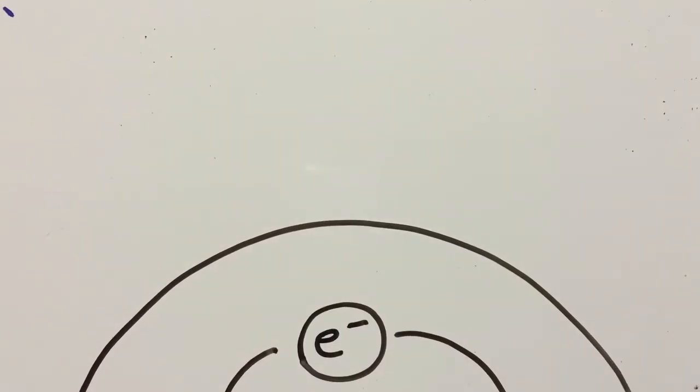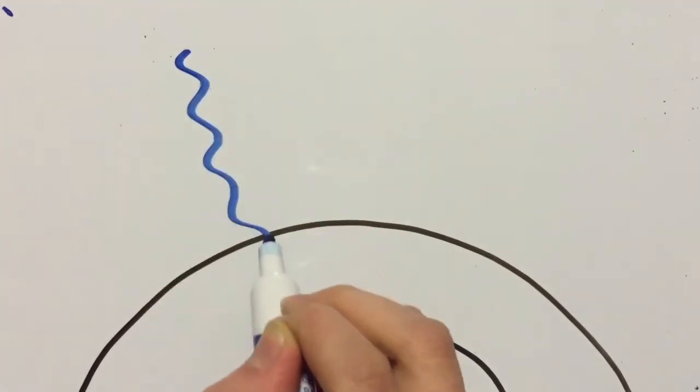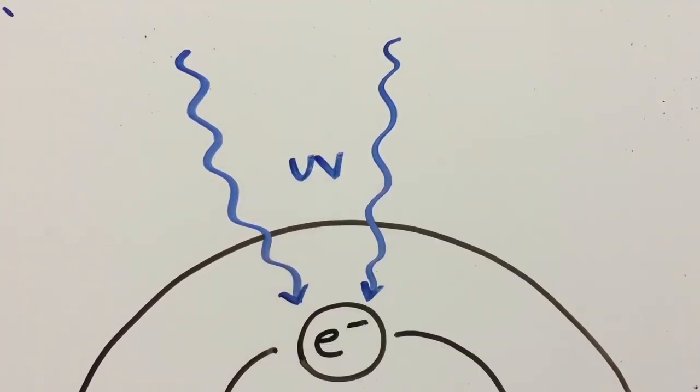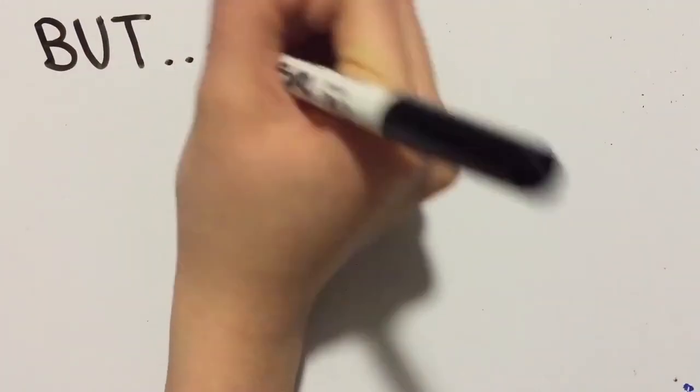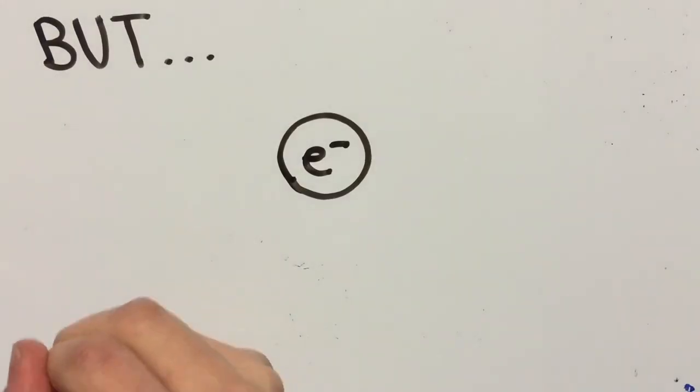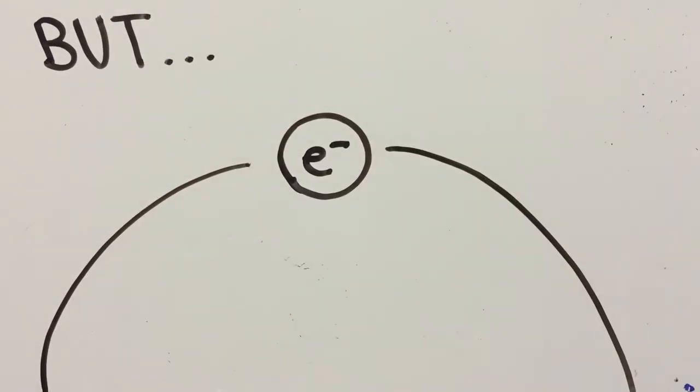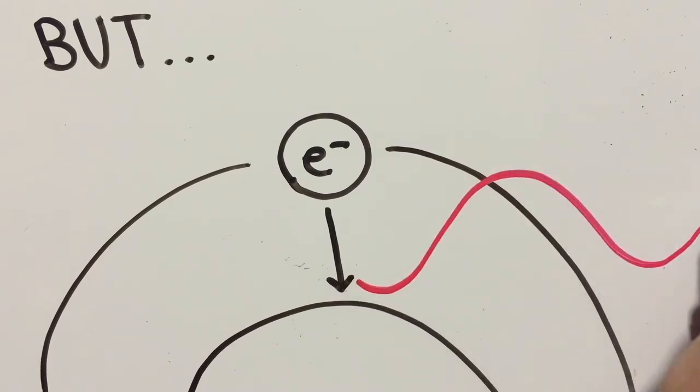In bandgap absorption, an electron absorbs UV radiation, which causes it to jump to a higher energy level. This excited electron doesn't want to stay at higher energy, so it drops back down, releasing the extra energy as infrared radiation, or heat.